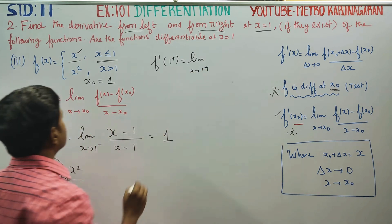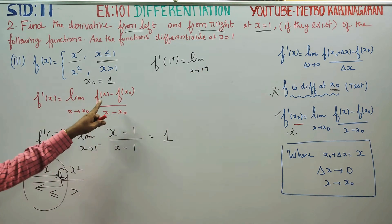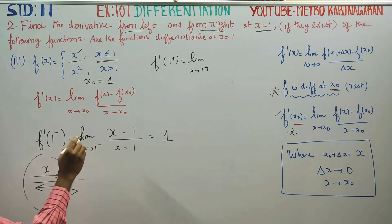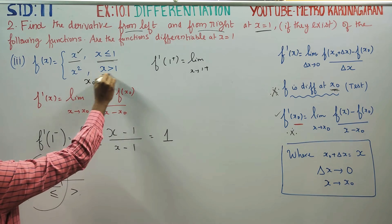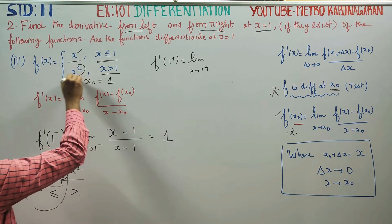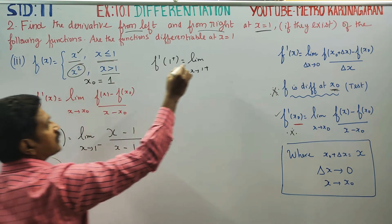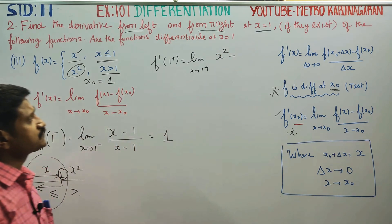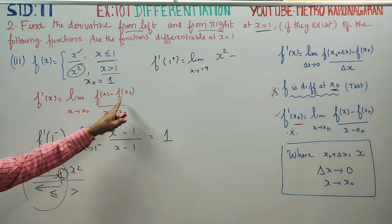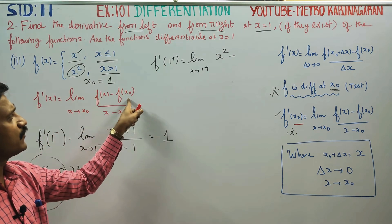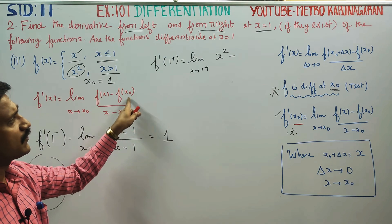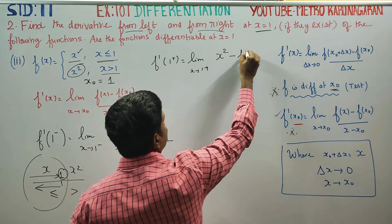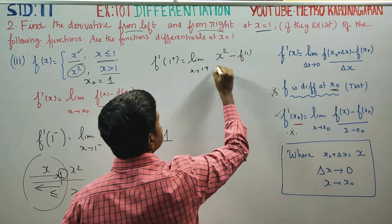The formula is f(x) minus f(x₀) by x minus x₀, for the right hand side where x is greater than 1. For x greater than 1 but less than 2, the function is x squared. We substitute f(1) here — f(1) equals 1.